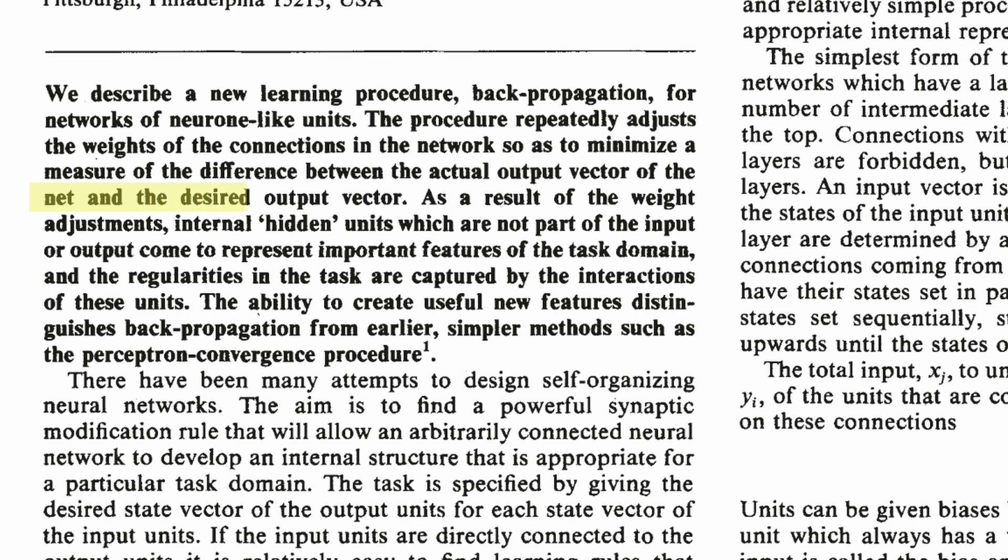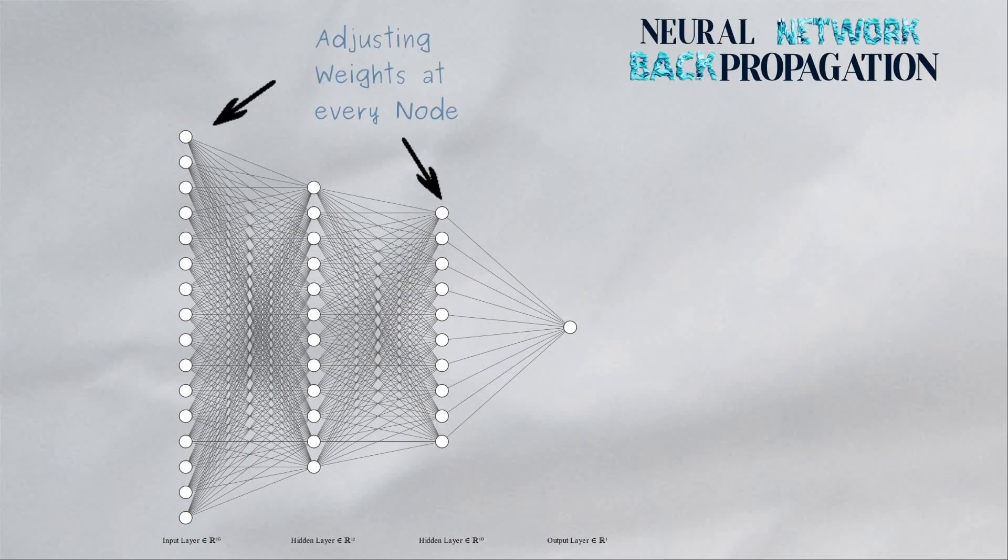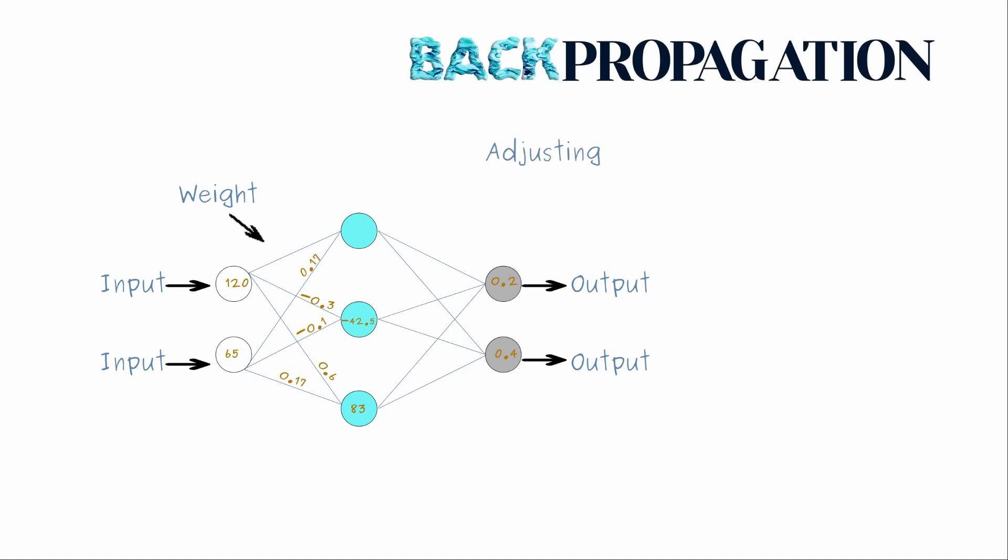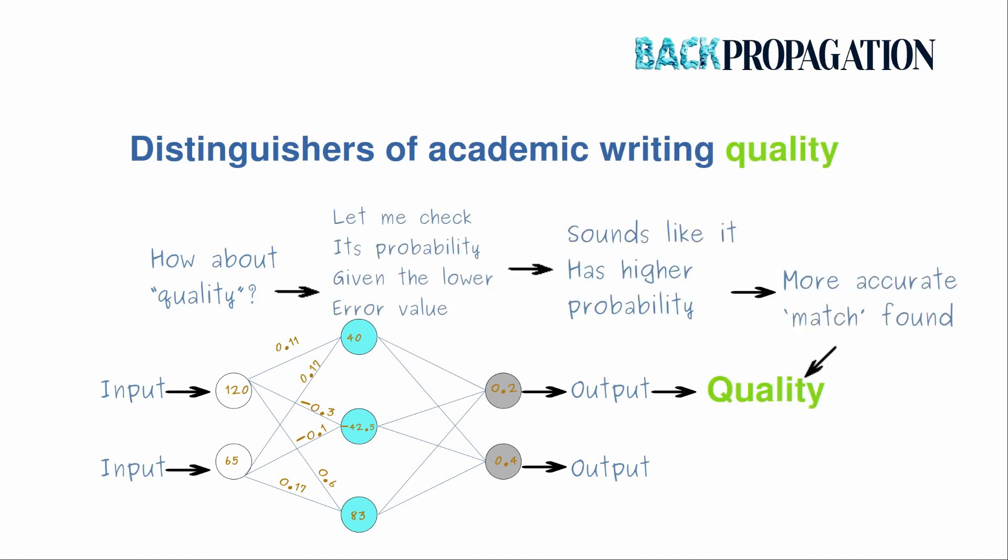As a result of the weight adjustments, internal hidden units which are not part of the input or output come to represent important features of the task domain. A much simpler explanation is the idea of allowing the backward pulse in a neural network to adjust the weights or importance given to each input or decision to minimize the error and reach a more accurate prediction in the output.